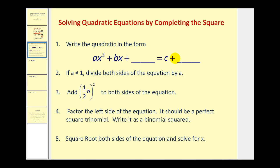Next, if the leading coefficient a is not equal to 1, we have to divide every term by a. Third, we're going to add one-half times b squared to both sides of the equation — b is the coefficient of the x term, so we take half of that, square it, and add it to both sides. Step 4: factor the left side as a perfect square trinomial, writing it as a binomial squared. Then square root both sides and solve for x.